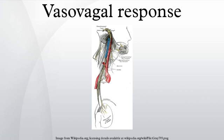Treatment for vasovagal syncope focuses on avoidance of triggers, restoring blood flow to the brain during an impending episode, and measures that interrupt or prevent the pathophysiologic mechanism. The cornerstone of treatment is avoidance of triggers known to cause syncope. However, new psychological research has shown that patients show great reductions in vasovagal syncope through exposure-based exercises with therapists if the trigger is mental or emotional, such as the sight of blood. If the trigger is a specific drug, avoidance is the only treatment. A patient can move or cross their legs and tighten leg muscles to keep blood pressure from dropping so drastically before an injection.